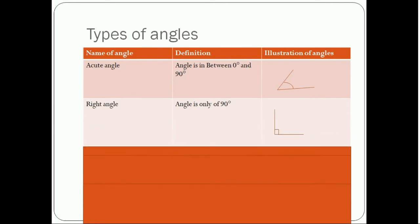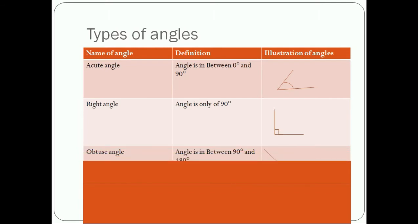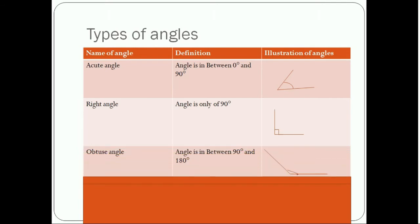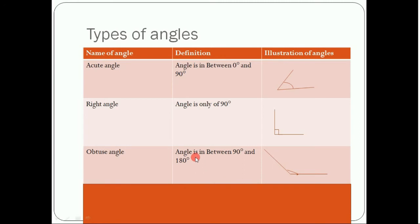The second type of angle is right angle. A right angle is exactly 90 degrees and it has only two lines — one vertical and one horizontal. The third type of angle is obtuse angle. An obtuse angle is between 90 degrees and 180 degrees.